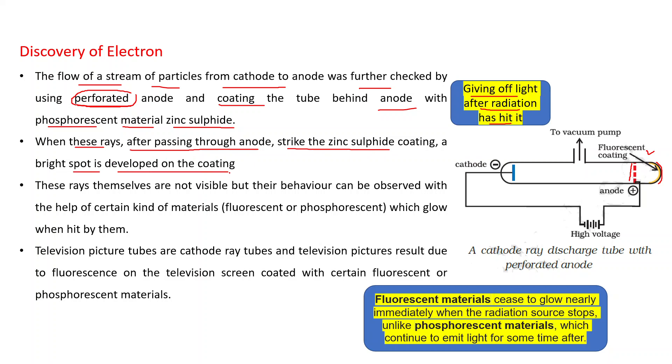These rays themselves are not visible, but their behavior can be observed with the help of certain kind of materials, fluorescent or phosphorescent, which glow when hit by them. Television picture tubes are cathode ray tubes, and television pictures result due to fluorescence on the television screen coated with certain fluorescent or phosphorescent materials. Now, what are the differences between these two fluorescent and phosphorescent materials? Fluorescent materials cease to glow nearly immediately when the radiation source stops. Unlike phosphorescent materials, which continue to emit light for some time after.